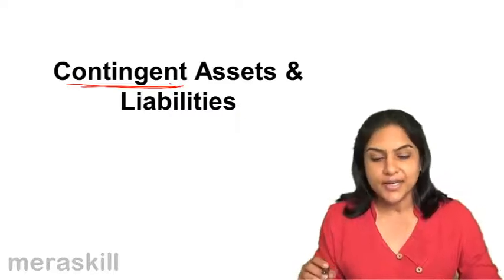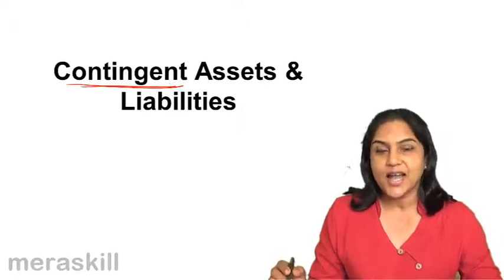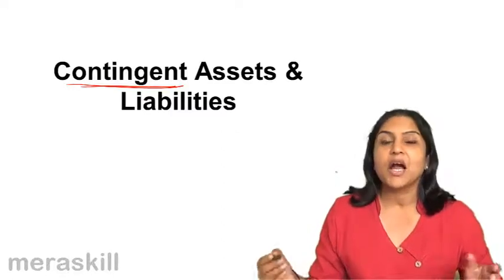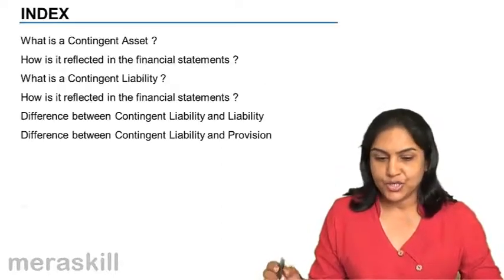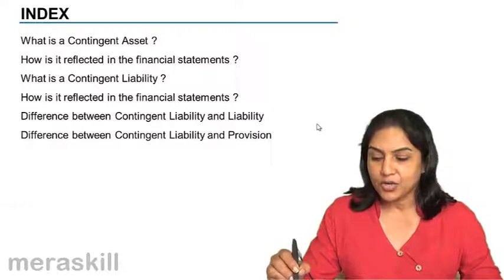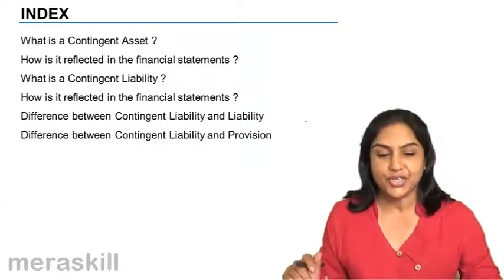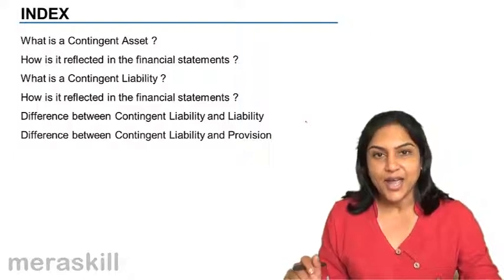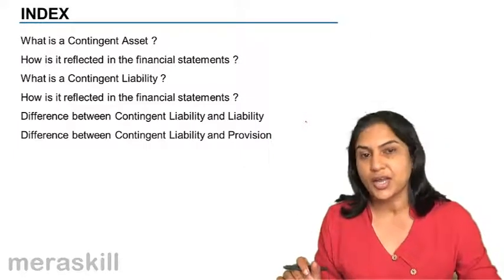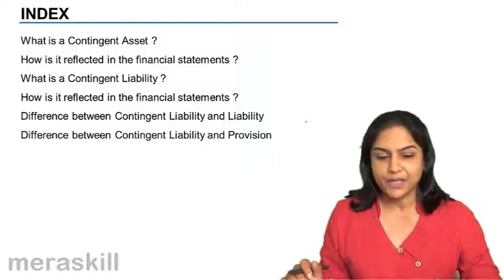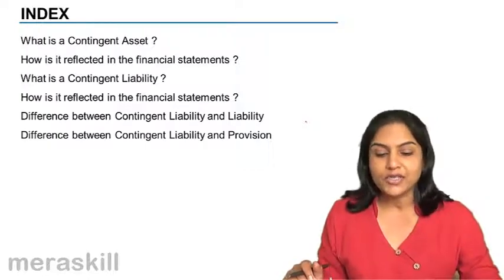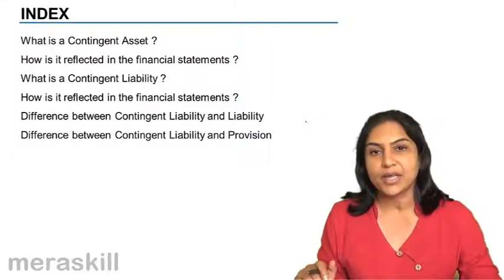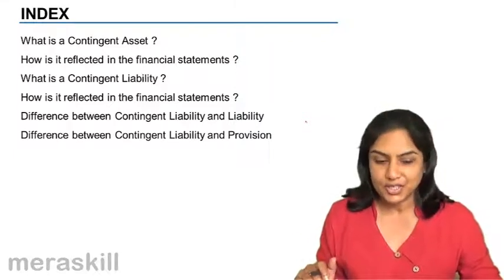Let us quickly understand contingent assets and liabilities — what are they, what is the accounting treatment, and how are they disclosed. Our course of discussion would be structured as follows: first, we will understand what is a contingent asset and how it is treated in the financial statements. Then we will see what is a contingent liability and how it is shown in the financial statements.